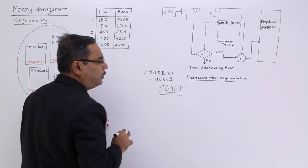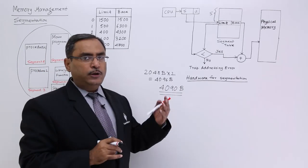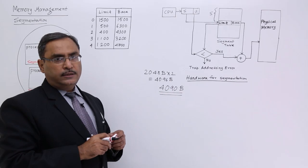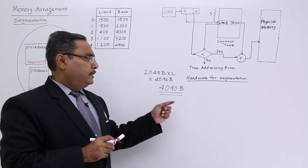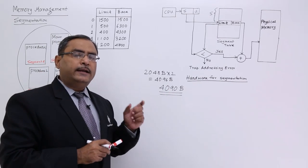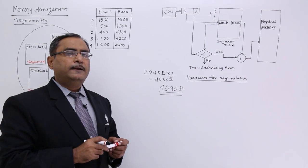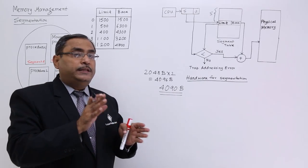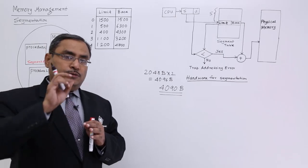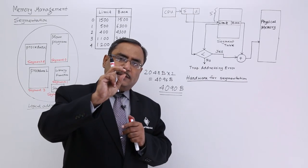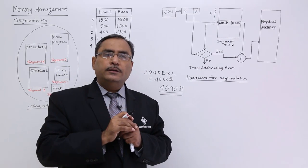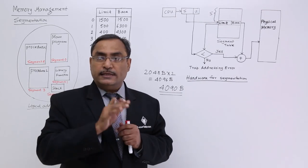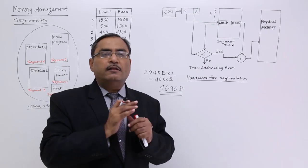Now suppose there is a particular process to be loaded onto the computer's memory, which has a size of 4090 bytes. With a page size of 2048 bytes, two pages can hold 4096 bytes. So the last six bytes will remain vacant in the respective frame, but that will not be recorded in the page map table. There will be free memory space in the computer's memory, but no trace of it in the page map table. This is known as internal fragmentation.